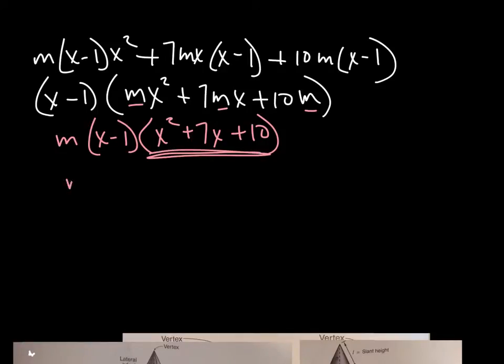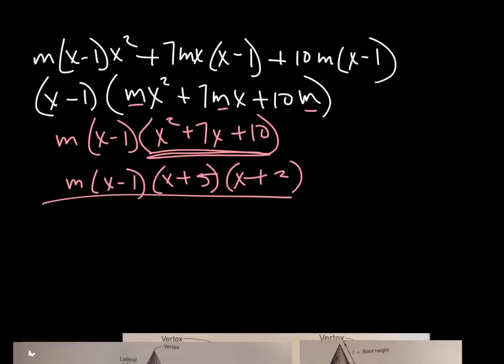But you notice we still have an m here. So let's factor out that m as well. That m is going to be factored out completely. And we're going to look at just that. Two numbers multiplied give me 10, added give me 7. And I get that, and I'm done.